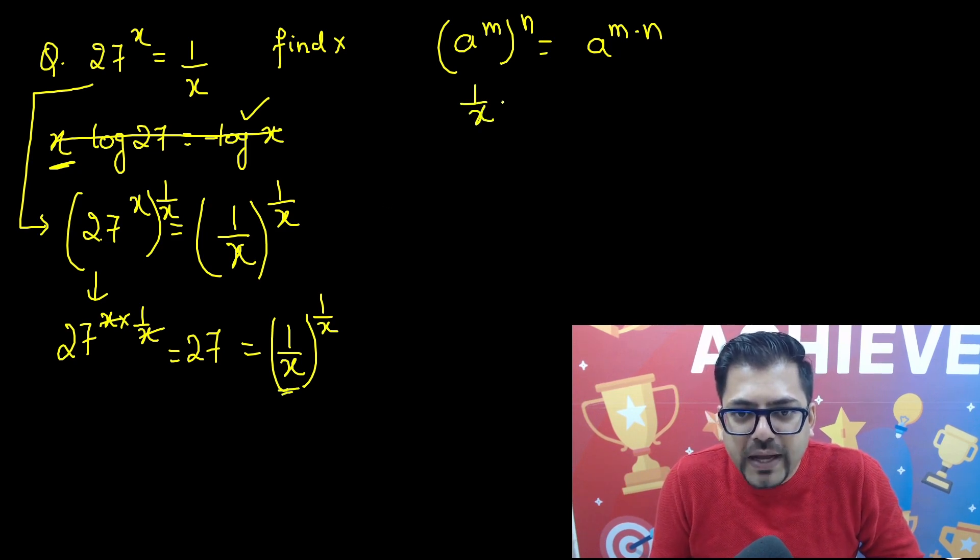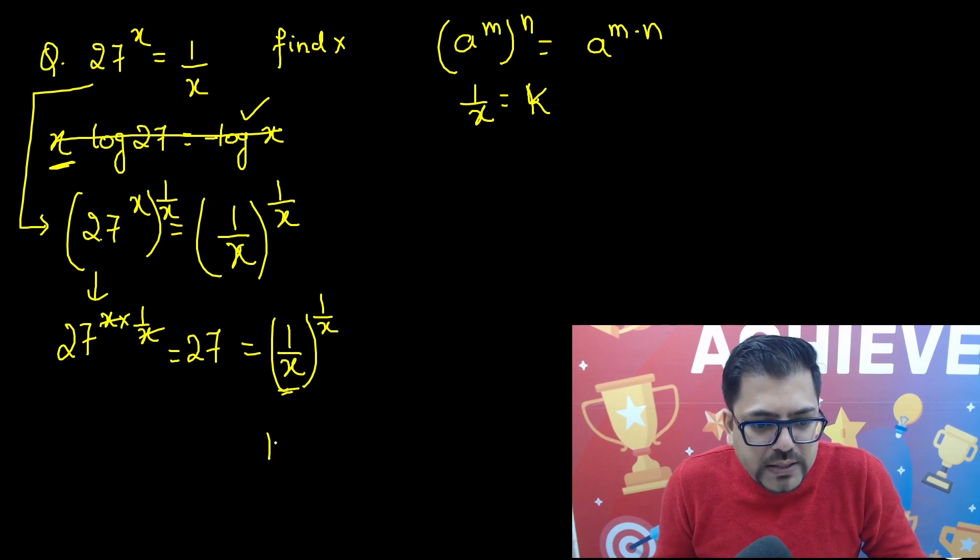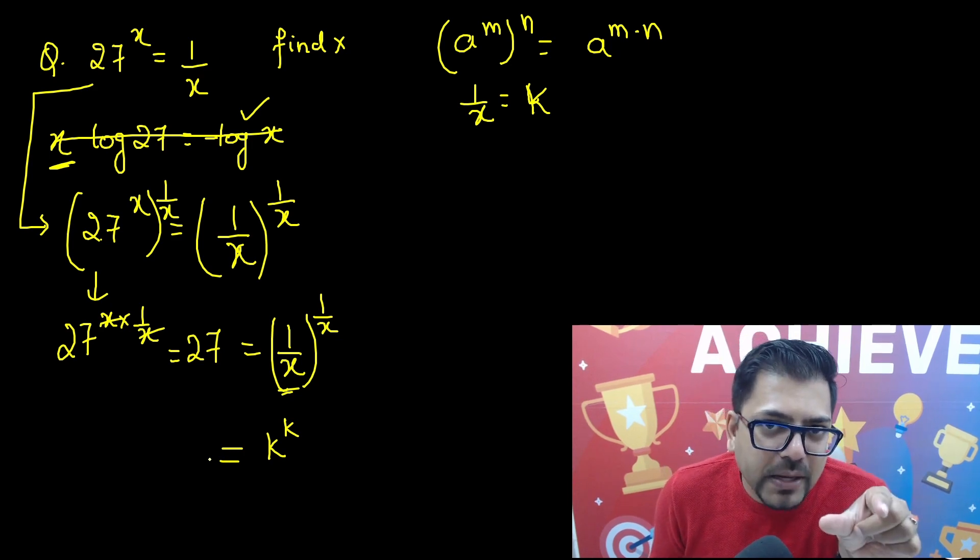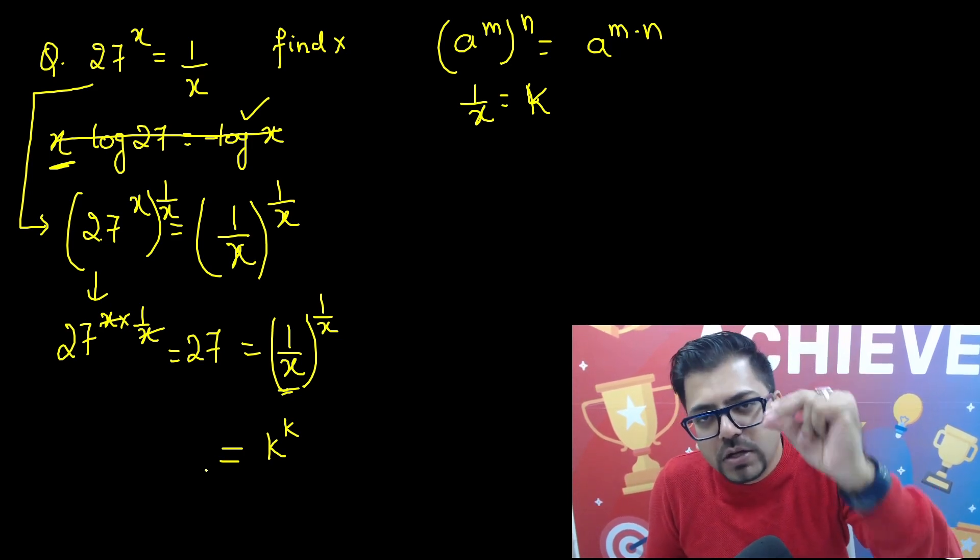Or if you assume this 1 by x equals to something of k, k sort. So this is nothing but k raised to power k. So in the LHS also, if you get the same type, that same number on the base, same number in the power, the work is done.